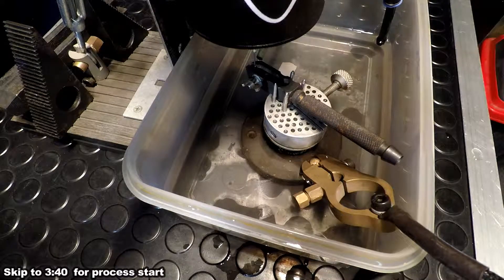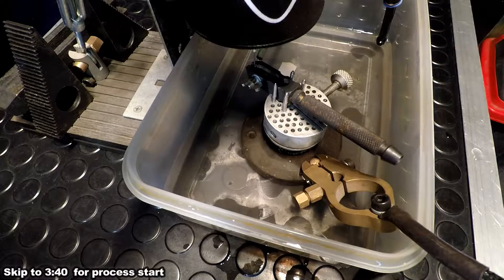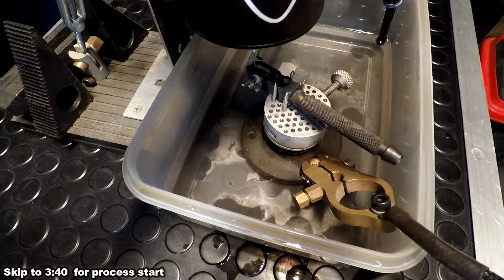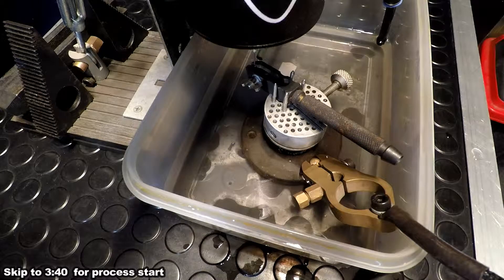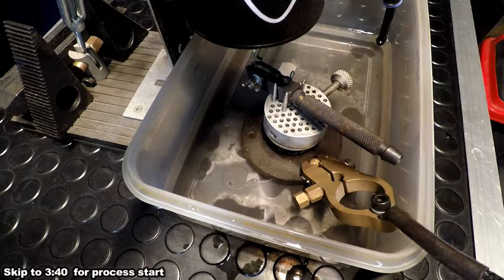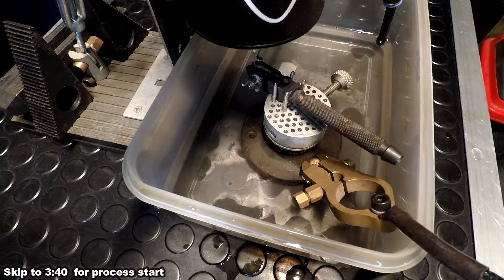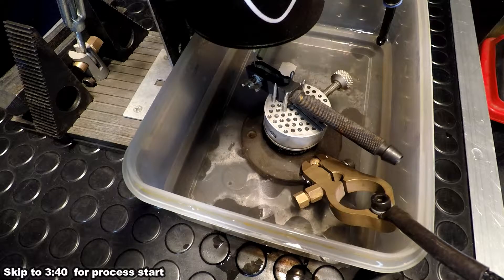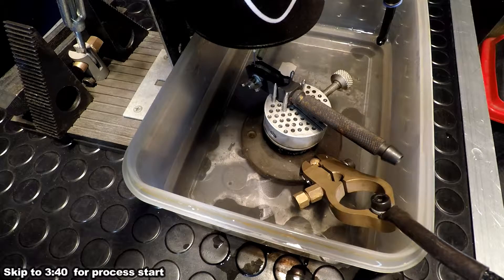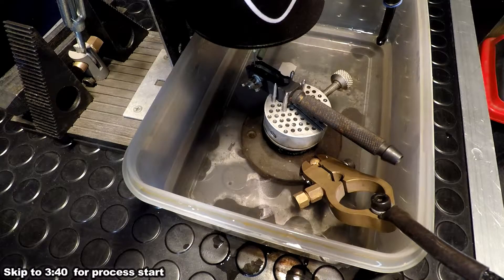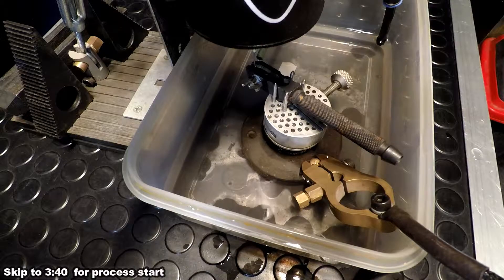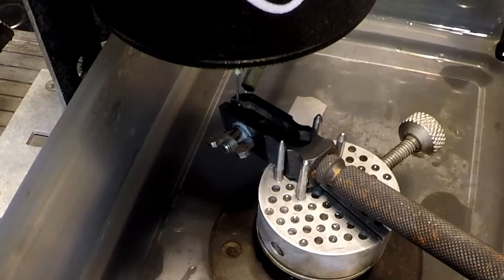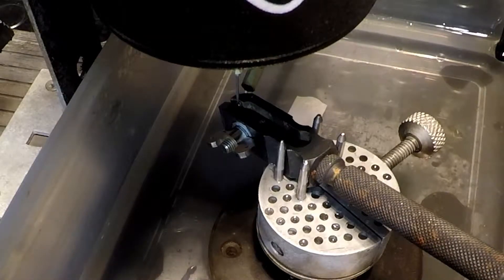The controller settings for this: top spark gap 76 volts, lower 40. The spark time is 100 microseconds on, 200 microseconds off. I'm running the electrode as negative and workpiece as positive, and it's running a through hole. The pump is on 15 percent and starting.